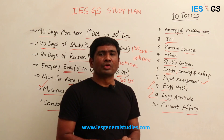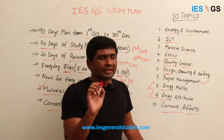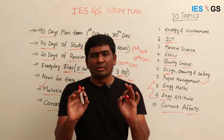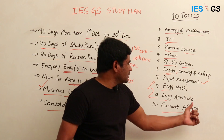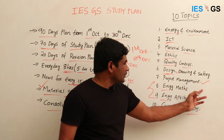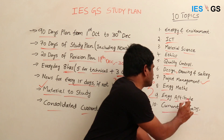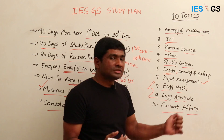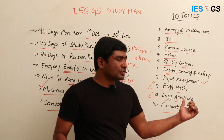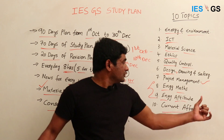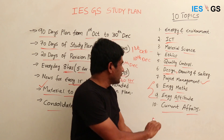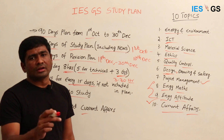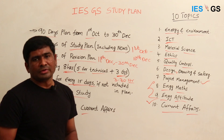A student recently asked: if you are weak in both engineering mathematics and engineering aptitude and have limited time, which should you prioritize? My suggestion is engineering aptitude, because it includes logical reasoning and English-based aptitude which are easier to learn quickly compared to engineering mathematics. The detailed daily plan is uploaded on our website — please do follow that plan.